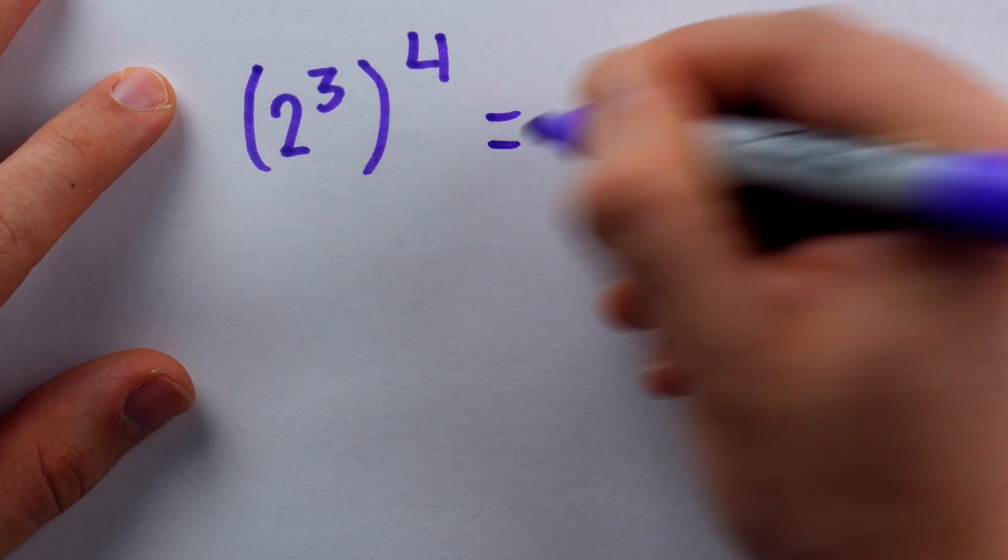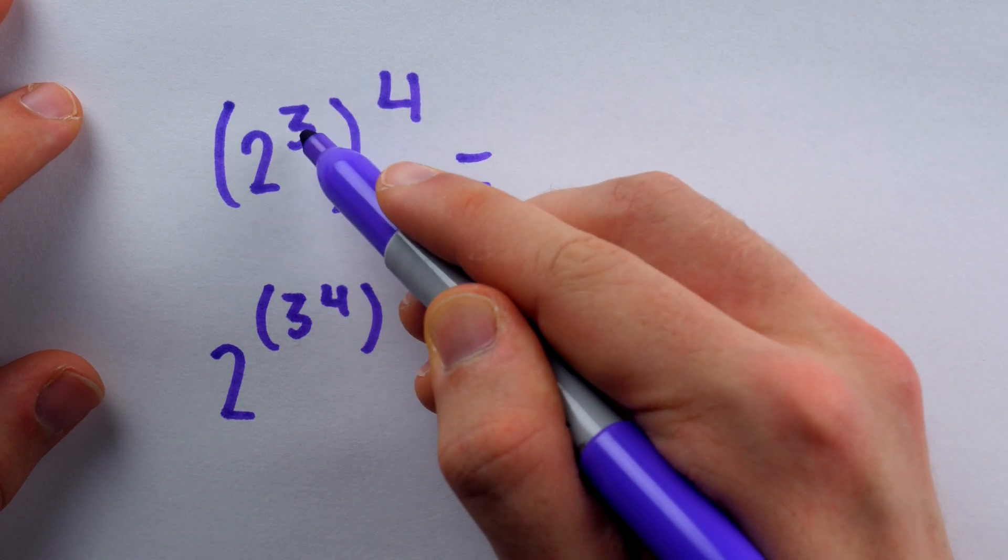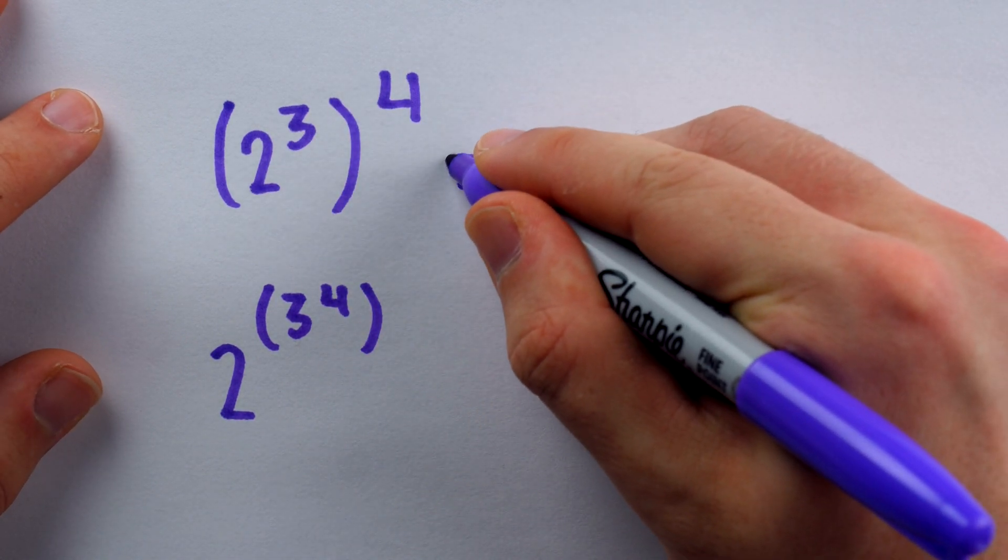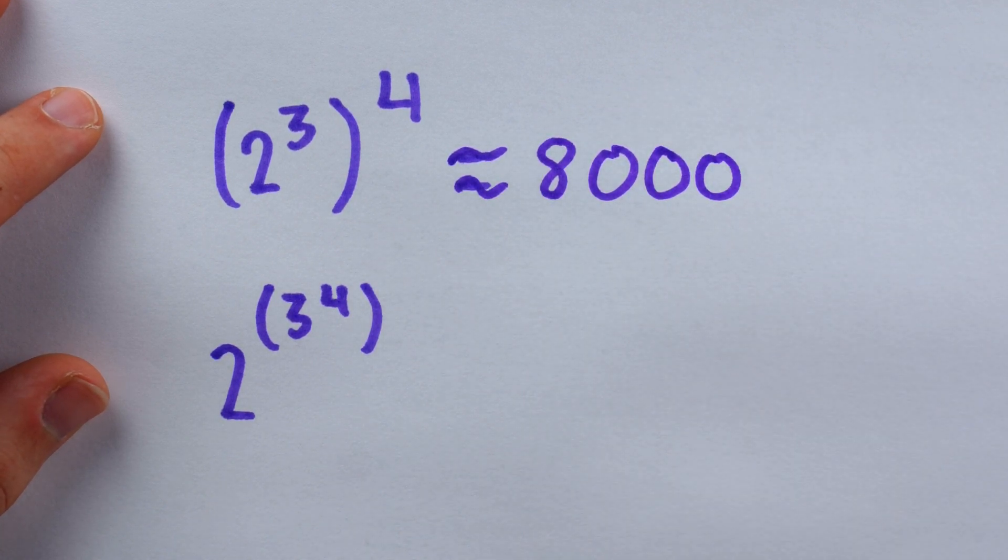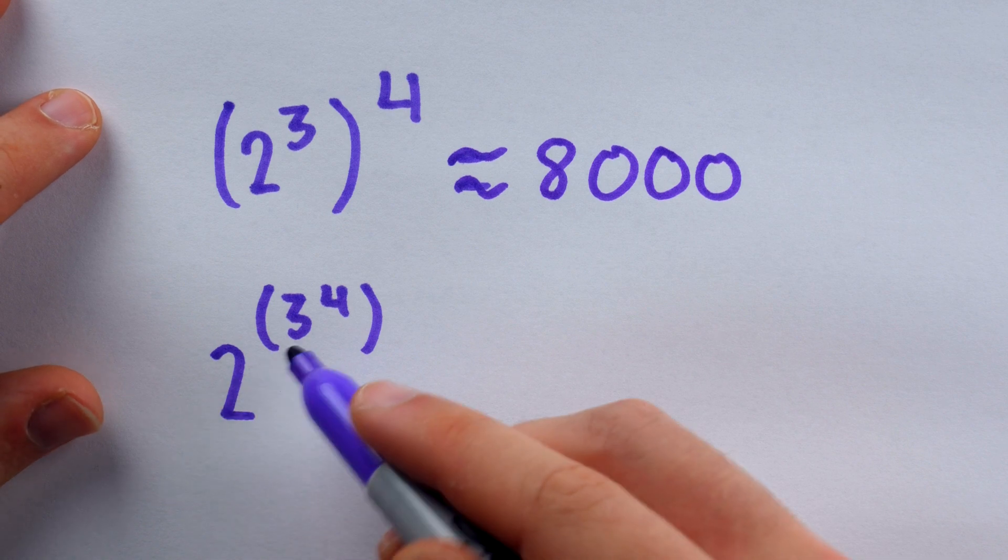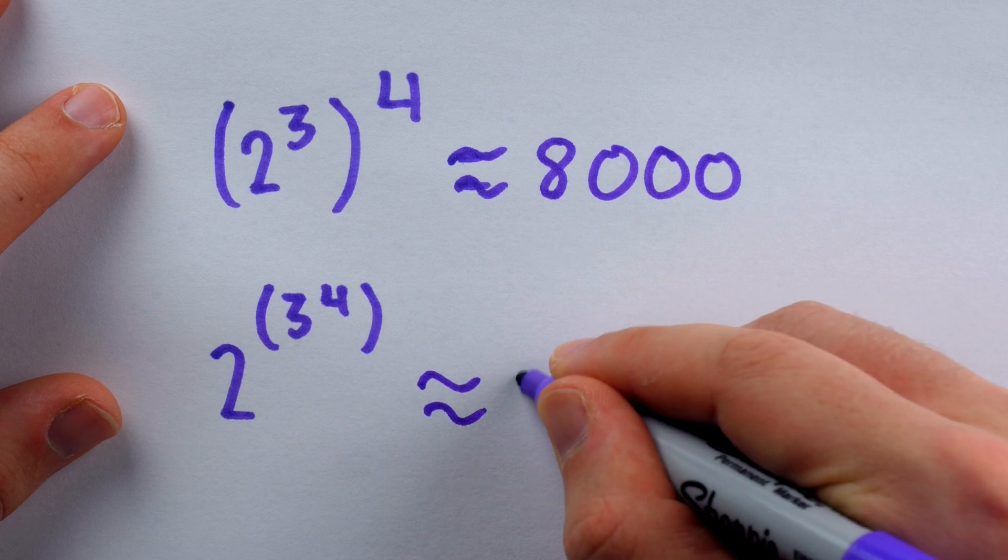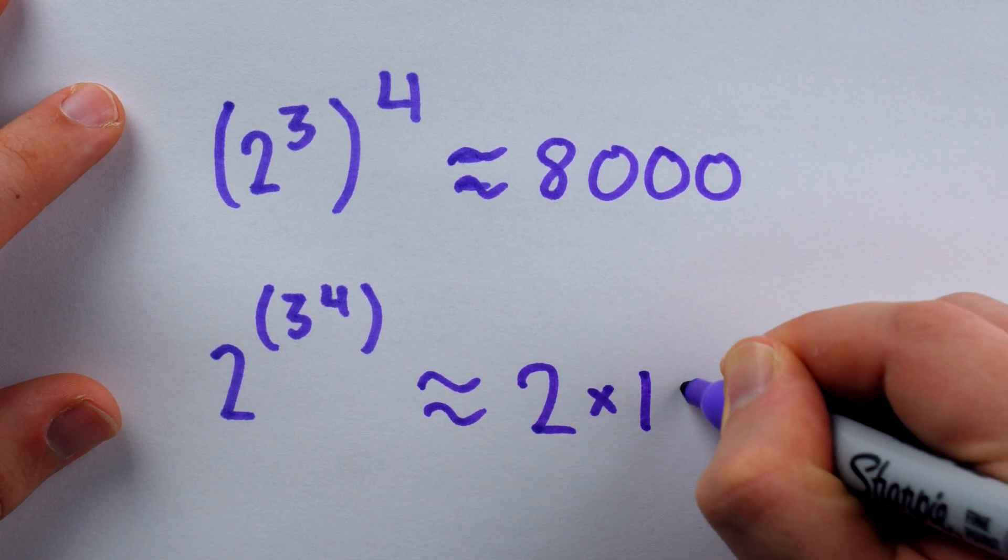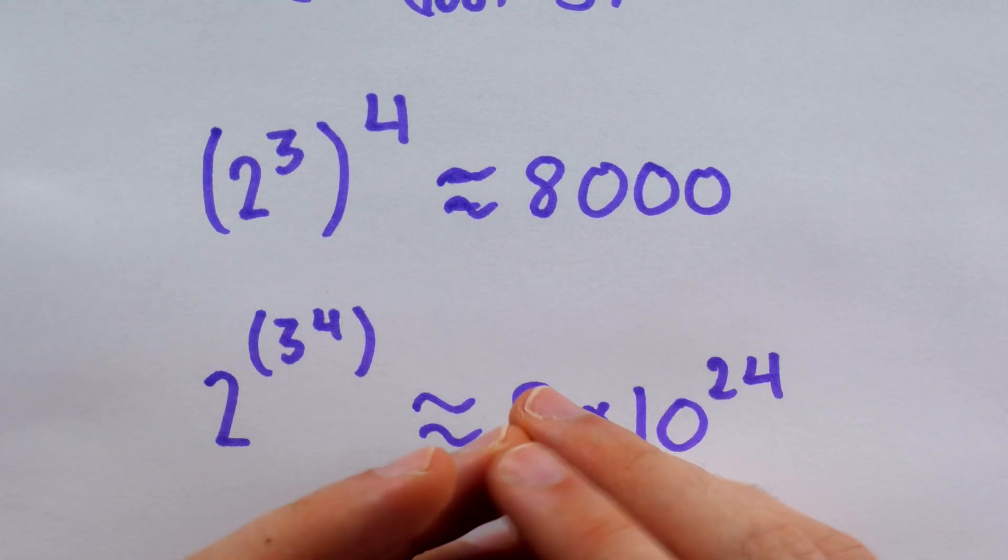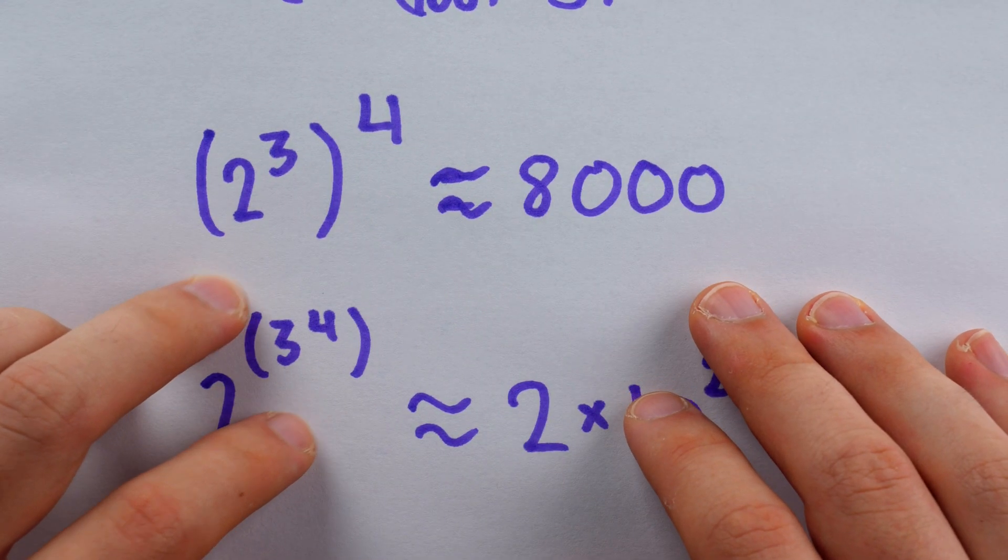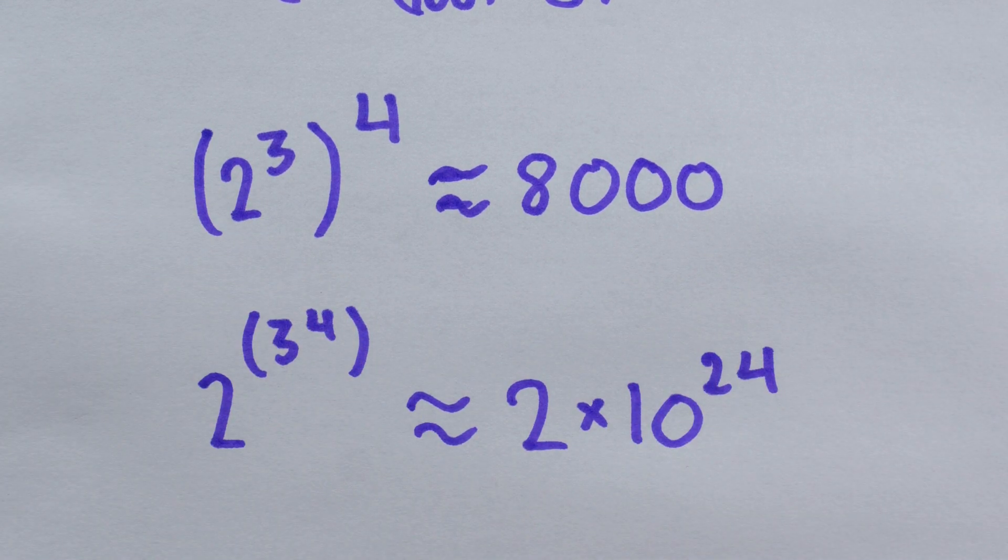In this situation, it definitely matters how we group things. 2 to the power of 3 to the power of 4 is 8 to the power of 4, and it ends up being about 8,000. Whereas 2 to the power of 3 to the power of 4 is 2 to the power of 81. This is a huge number. It's around 2 times 10 to the power of 24. So many of these basic properties we learn and might think are trivial at first glance are a big deal, and they can be used to make some mental calculations quite a bit easier.